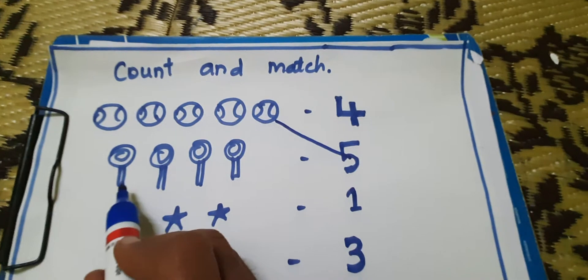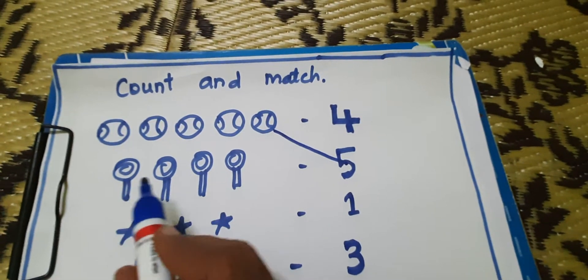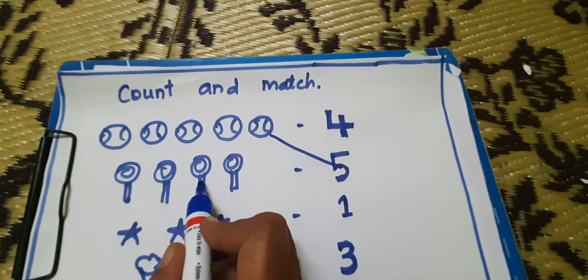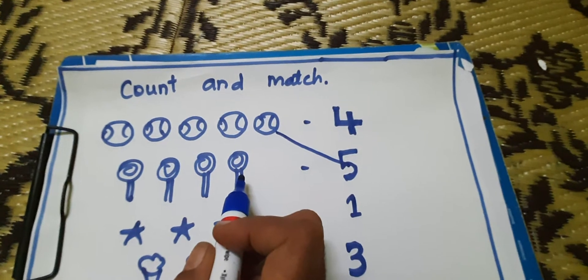Next, lollipops. How many lollipops are there? Count it. 1, 2, 3, 4. 4 lollipops. How many lollipops are there? 4.